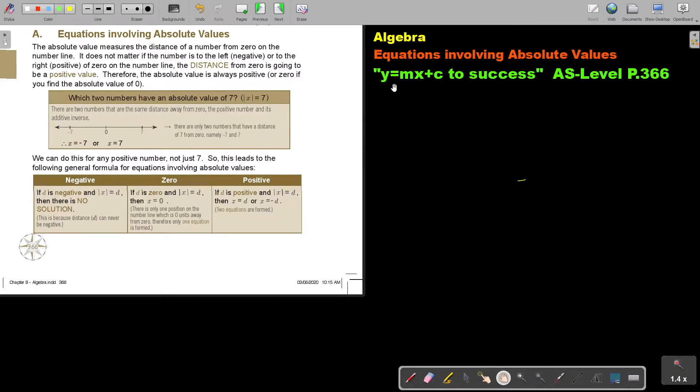In this video, we will focus on equations involving absolute values. You will find this on page 366 in the Namibia AS level mathematics textbook Y equals MX plus C to success.